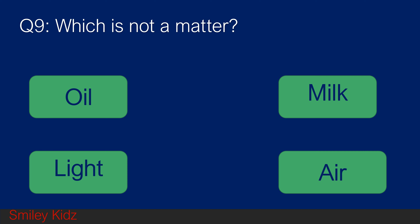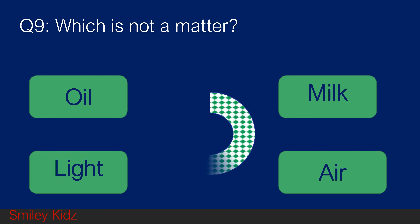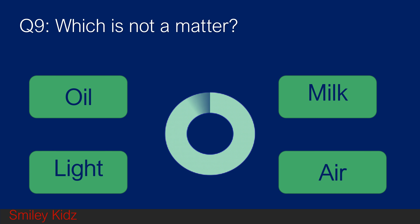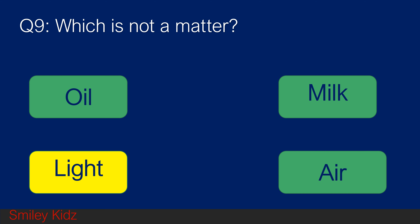Question number 9. Which is not a matter? Option A oil, option B milk, option C light, and option D air. Your time starts now. And your time is up. The right answer is light. Light is not a matter.